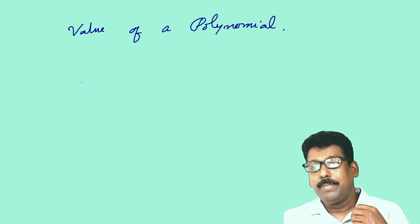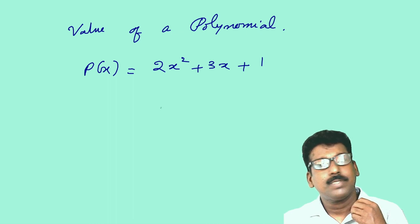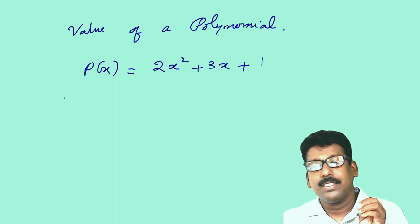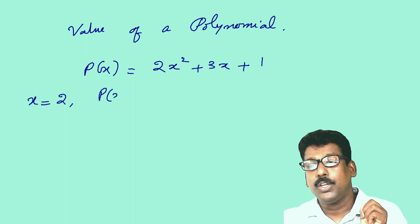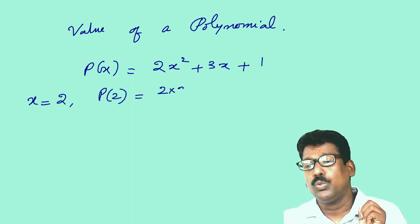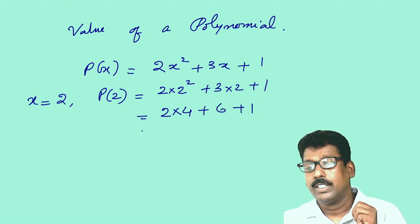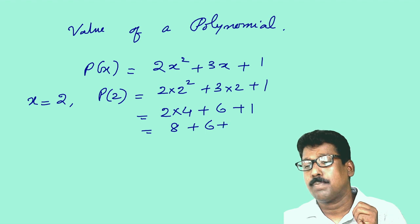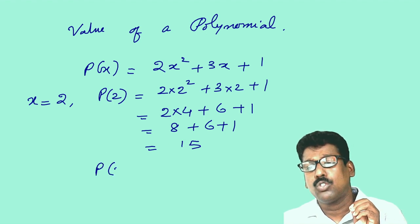Now let us look at the value of a polynomial. Take p(x) = 2x² + 3x + 1. If x = 2, we write p(2) = 2 × 2² + 3 × 2 + 1 = 2 × 4 + 6 + 1 = 8 + 6 + 1 = 15. So p(2) = 15.